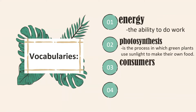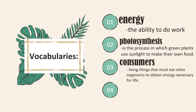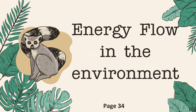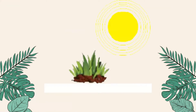We also have consumers. Consumers are living things that must eat other organisms to obtain energy necessary for life. We also have producers. Producers are living things that can make their own food using air, light, soil, and water. Only plants can produce their own food.